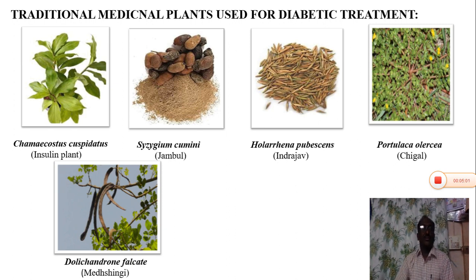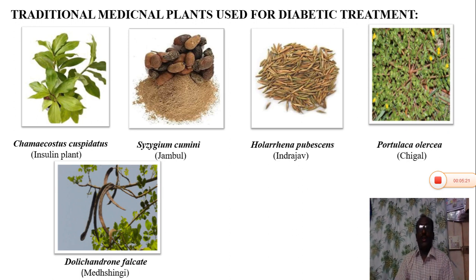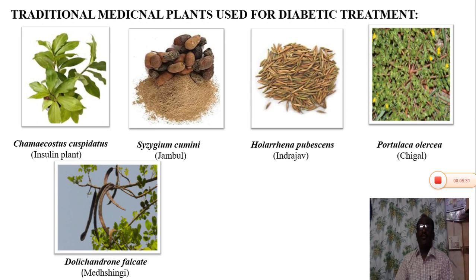One plant is Costus pictus, which is familiarly called as the insulin plant. Next was Syzygium cumini, commonly called jamun, whose seeds and seed powder are very effective in the treatment of diabetes as they have insulin-mimicking properties. Another one is Holarrhena pubescens, familiarly called Indraserv, which is a very effective plant in reducing blood sugar levels immediately.